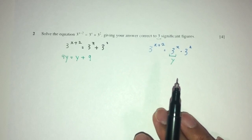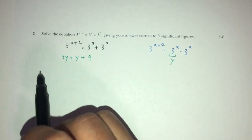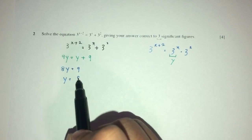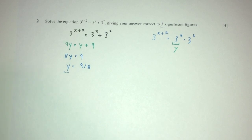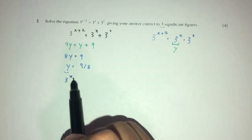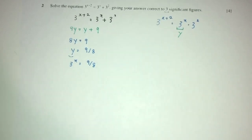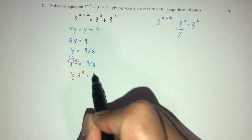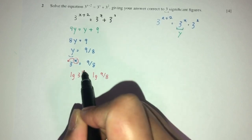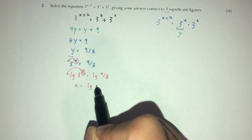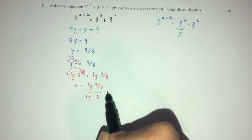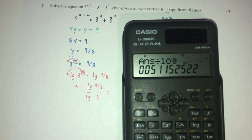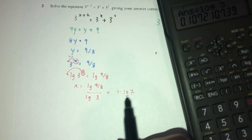What I can do is send everything to one side. You will have 9y minus y, which is 8y, equal to the value of 9. So y will be 9 divided by 8. Now, y is not what we're trying to find — y is 3 to the power of x equals 9 divided by 8. Since x is a power, I want to bring it down by applying log on both sides. So x will have to be log of 9 over 8 divided by log 3. That should be 0.107, correct to 3SF.